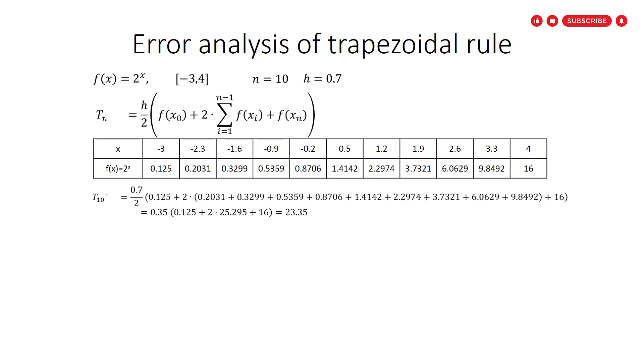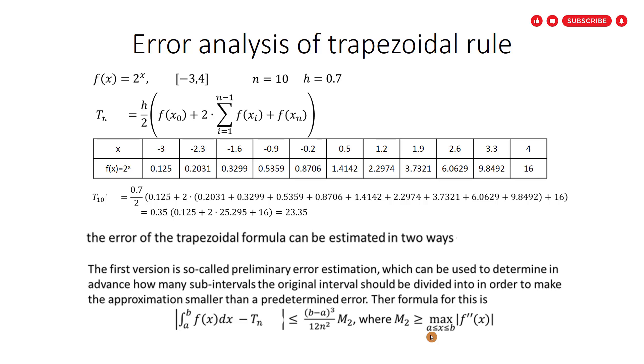Let's start to find the error for the trapezoidal rule. The error of the trapezoidal formula can be estimated in two ways. The first one is called preliminary error estimation, which can be used to determine in advance how many subintervals the original interval should be divided into to make the approximation smaller than a predetermined error.